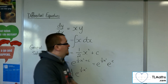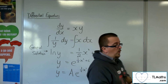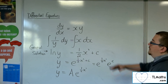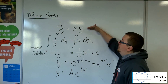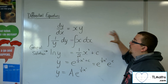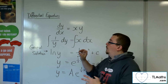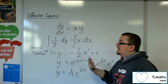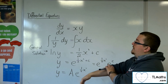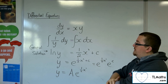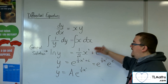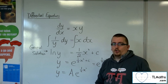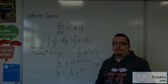So this is separation of variables — it's actually quite straightforward. Rearrange first: get all of the y's on the left-hand side and all the x's on the right. Then integrate. And then it is all about simplifying the general solution that you get.